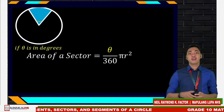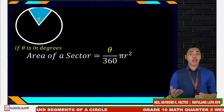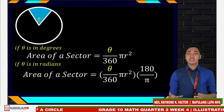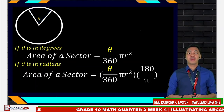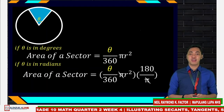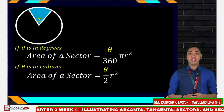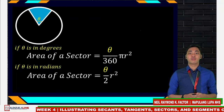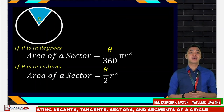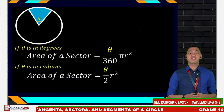So our formula would be theta over 360 times pi r squared. This is our formula for the area of a sector when theta is in degrees — theta here is your sector angle. Now, if theta is in radians, we multiply by 180 over pi, which allows us to cancel pi and reduce 180 and 360 to 1 and 2 respectively. Therefore, it reduces to theta over 2 times the square of the radius. Your technique in choosing which formula to use is the degree symbol: if the given has a degree symbol, use the first formula; otherwise, use the second.